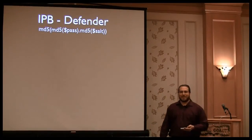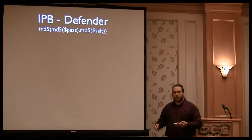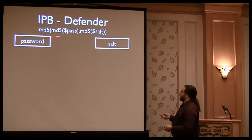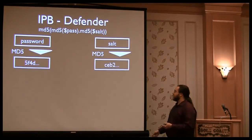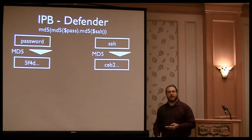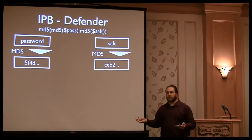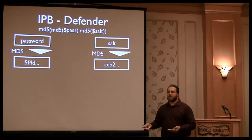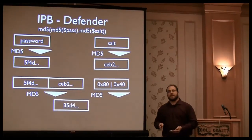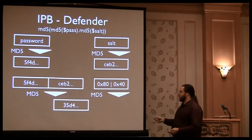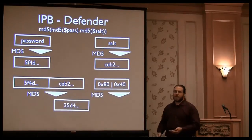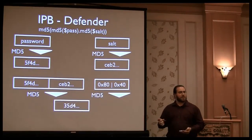Let me dive into the IPB algorithm. For the unlucky forum stuck with this algorithm, the defender starts with the user's password and salt from the database, performs two MD5 operations converting the password and salt into their MD5 hashes — and because it's web software, MD5 comes out as a 32-character lowercase hex string. They concatenate those strings and, because this is a 64-byte-long series, the padding and length go in their own block. So for the defender, they've had to do four MD5 blocks to get the final hash.